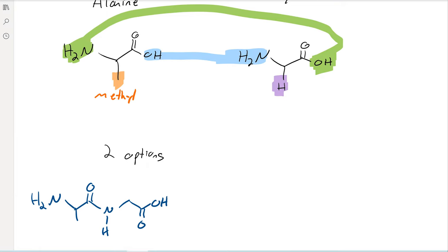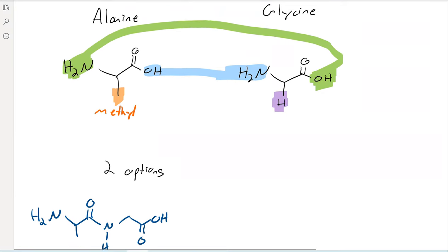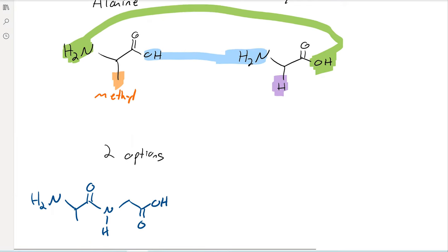And then we can have the opposite. We can have the glycine come first. And then the alanine with its methyl. And then the carboxylic acid.